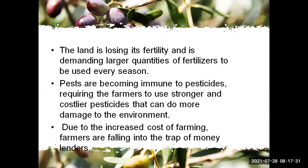The land began losing its fertility. It forced a lot of reduction in demand season after season. The plants became more dependent on chemical fertilizers, and the plants became immune to the pesticides, requiring more and more pesticides over time.